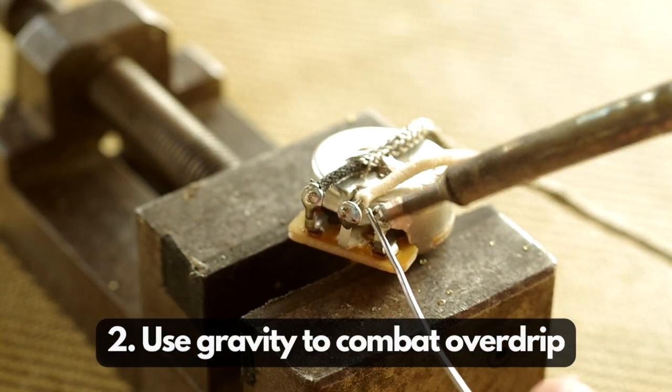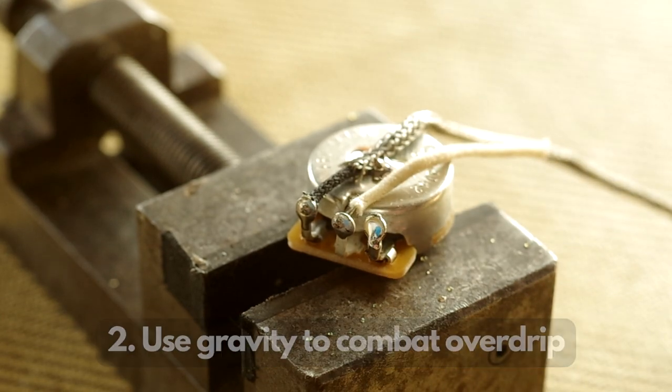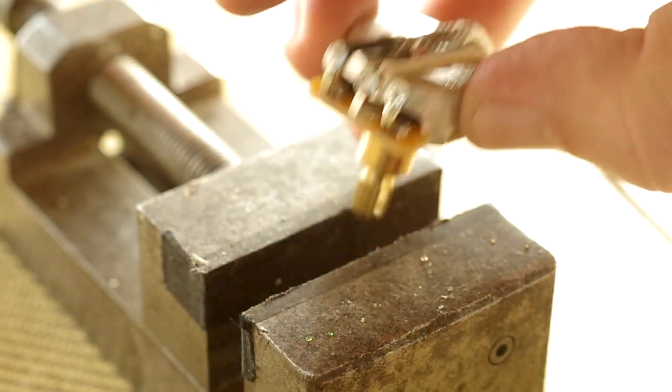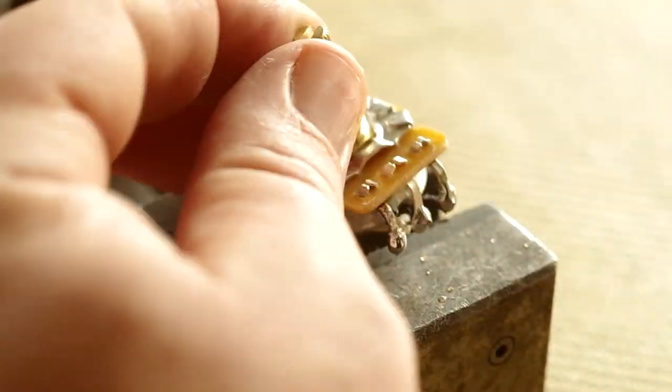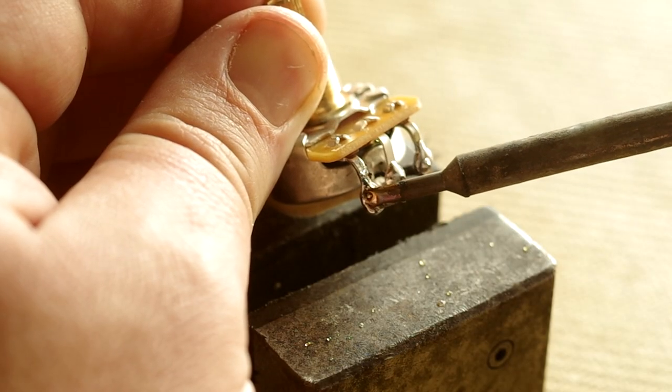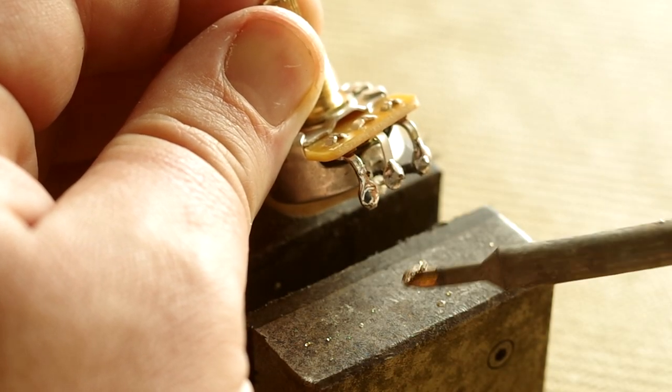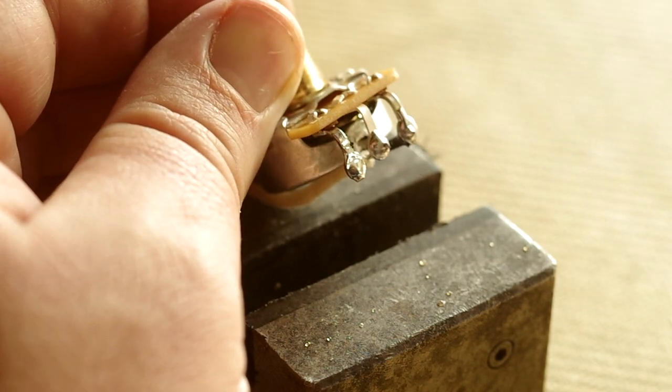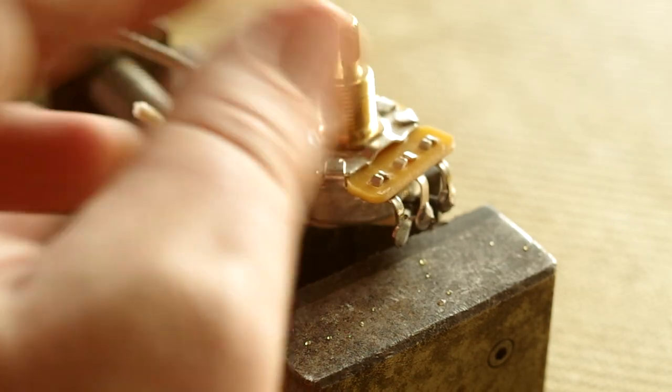We're getting to the top of the list here. Tip number two is to use gravity. Sometimes you get overdrip and solder just sneaks down a certain component. What you do is just flip it over, reheat, and then the solder will just fall onto the tip of your iron. It's a really tidy way of undoing what you did.